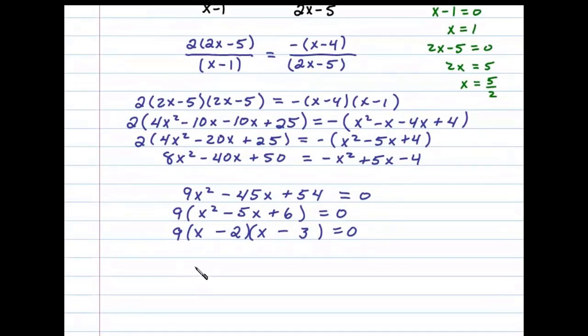So at this point we set each variable factor equal to 0. x minus 2 equals 0 or x minus 3 equals 0, and that tells me my two solutions are x equals 2 or x equals 3.